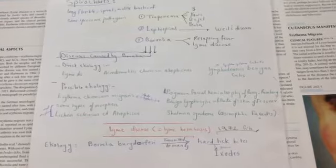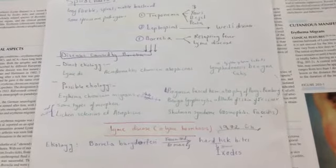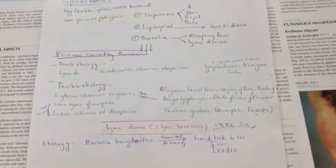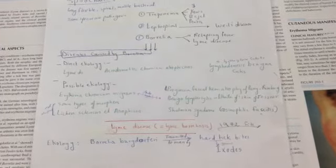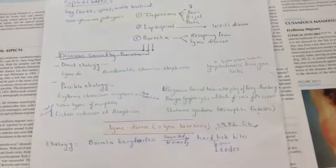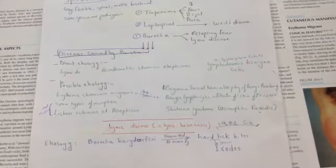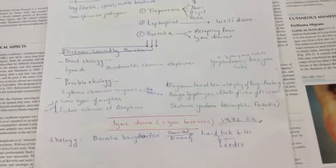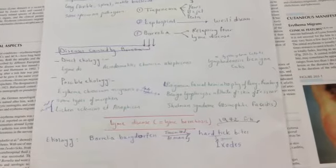Diseases caused by Borrelia: direct etiology includes Lyme disease, acrodermatitis chronica atrophicans, and lymphocytoma cutis. Possible etiology includes erythema chronica migrans, benign lymphocytic infiltrate of Jessner, some types of morphea, lichen sclerosus atrophicus.